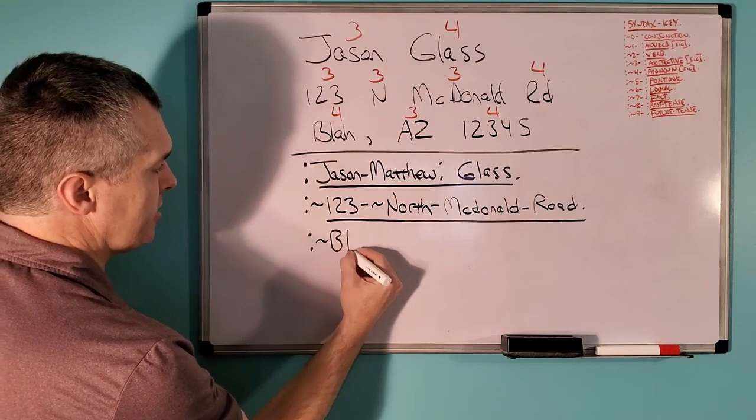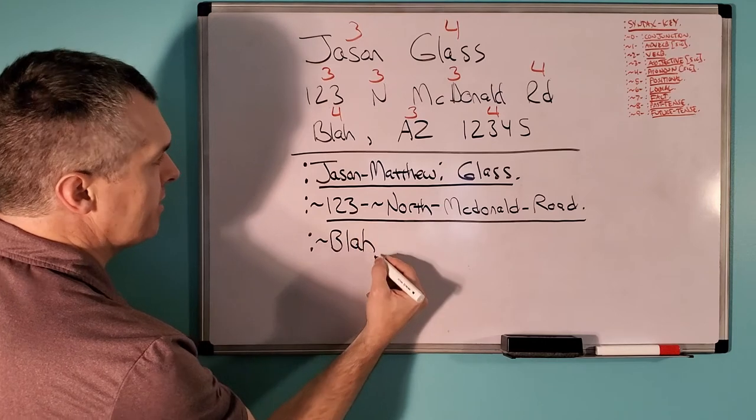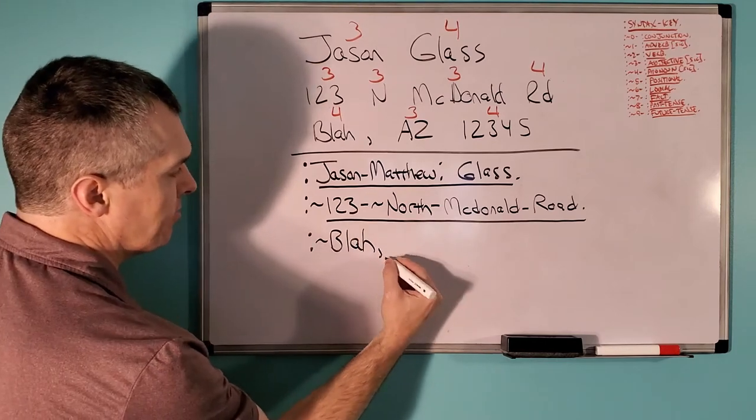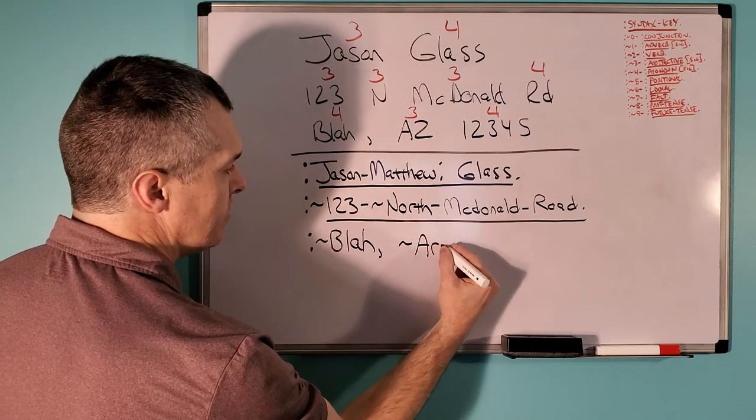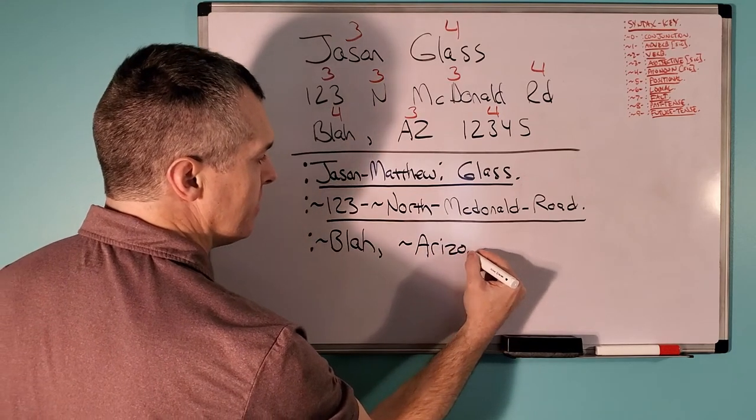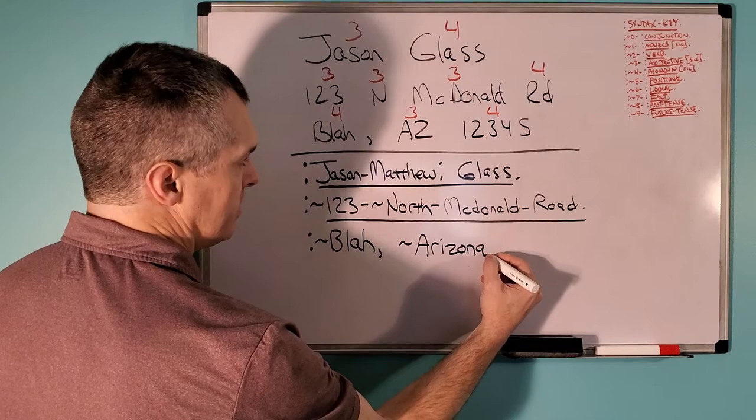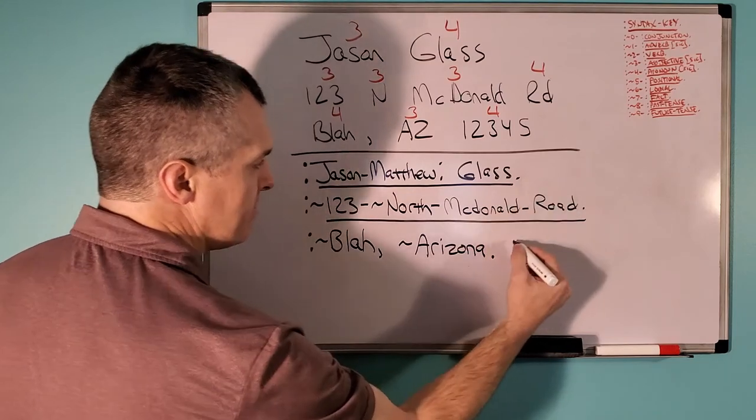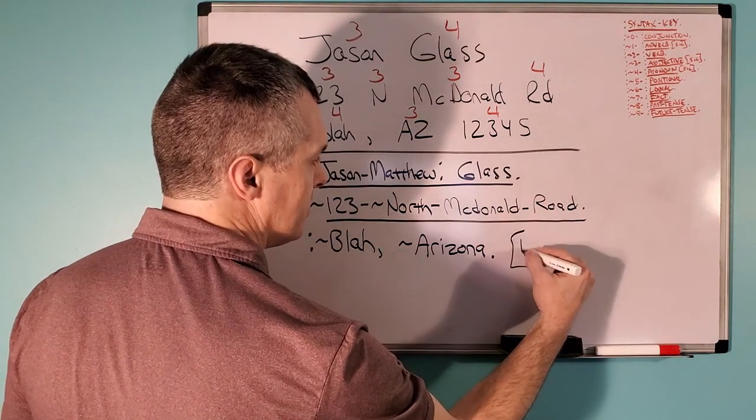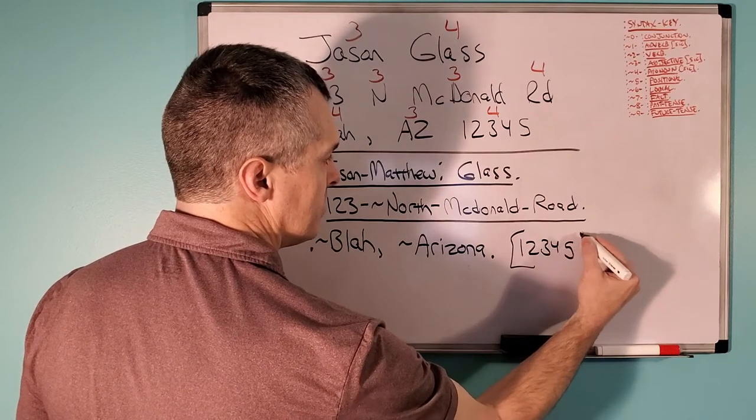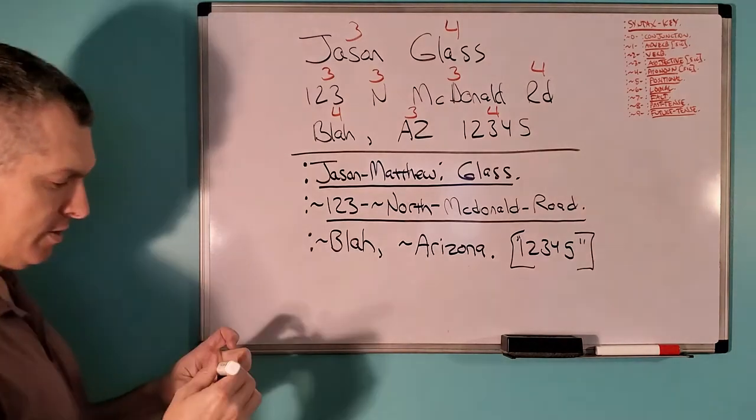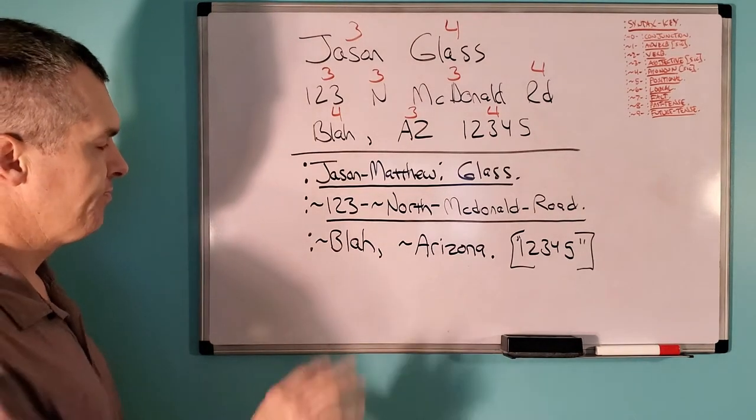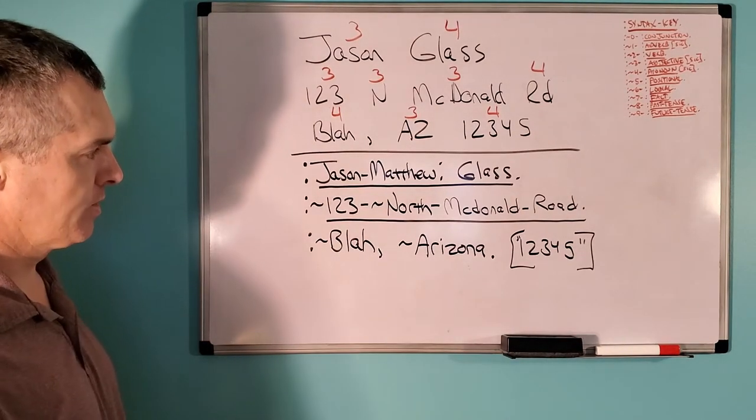And this is also a location. Blah. And then we can put a comma here and then a tilde. And then I would write out the name Arizona and the zip. Put it in brackets, quotations. That's just what I like to do with the zip. It's not even there.